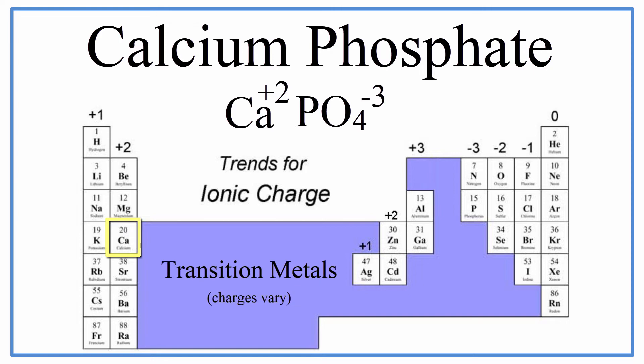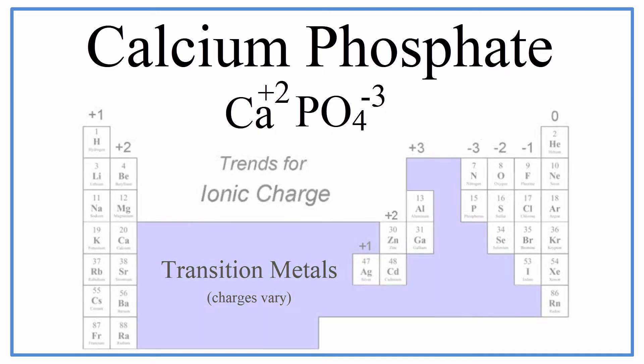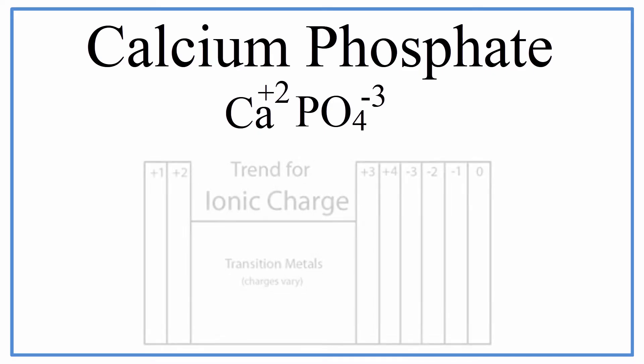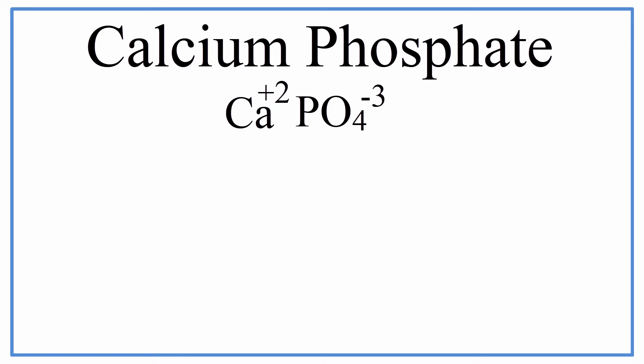You should be able to look at your periodic table and figure out the charges on the elements here that are listed with charges. A bit simpler table that might get you started memorizing that is right here. So now we have the charges for the calcium ion and the phosphate ion, and we need to balance those charges to get the final correct chemical formula.